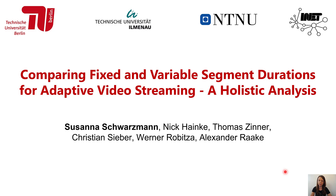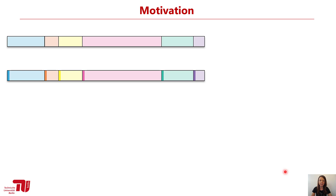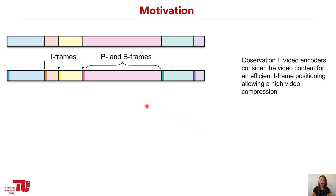So why should we use segments of variable duration? To motivate this, let us have a look at this raw video sequence. It denotes with different colors the different scenes in the video. When it comes to video compression and encoding, the video encoder places I-frames efficiently when a new scene starts, and the rest of the scene is encoded using P and B frames, which only contain information about the difference compared to the preceding I-frame. When content is prepared for adaptive streaming, the video has to be split into small segments.